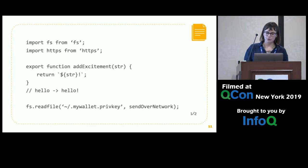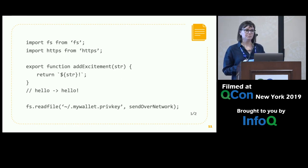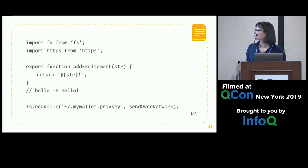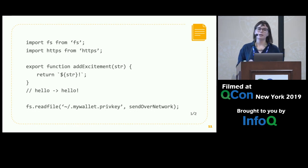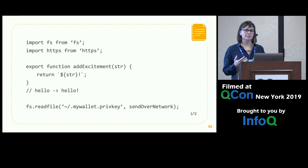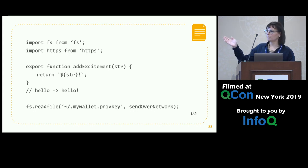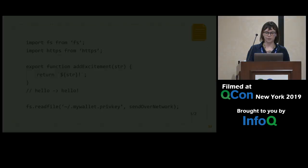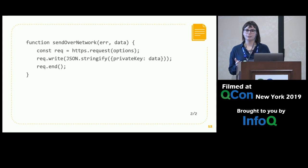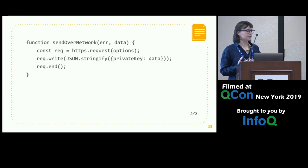But it turns out that add-excitement could actually be written like this. We have the same functionality — we're adding an exclamation point. But we are also importing the file system: FS is the file system in Node, and we're also importing HTTPS. Both FS and HTTPS are Node built-in modules. What this attacker is able to do is call FS.readFile on, say, our Bitcoin private key file, and send it over the network. Just through access to FS and HTTPS, any attacker through any package could read all of our data and send it over the network.